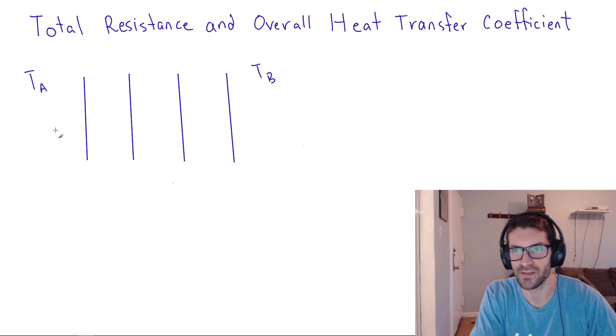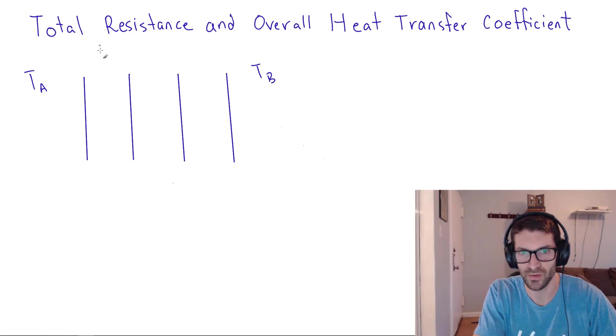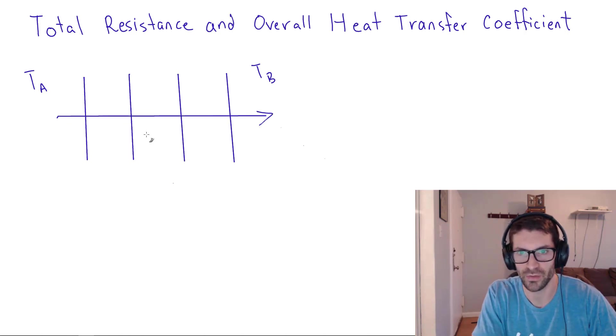There's a tendency for heat to want to travel from a high temperature space to a low temperature space. So if A is higher, then there's a drive for heat to want to go through in this direction.